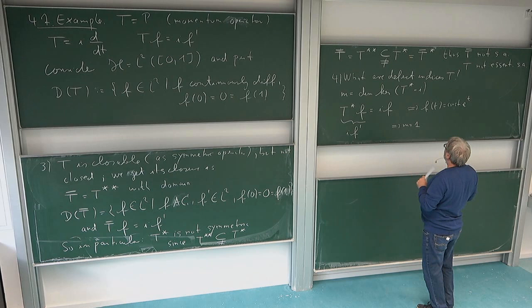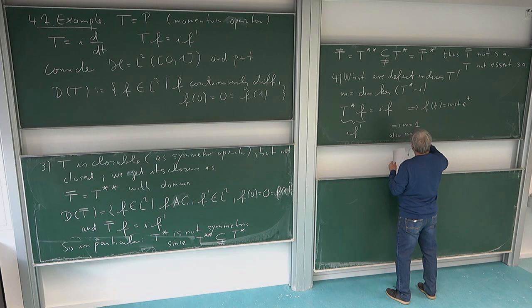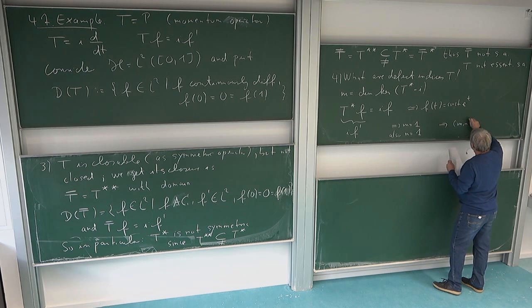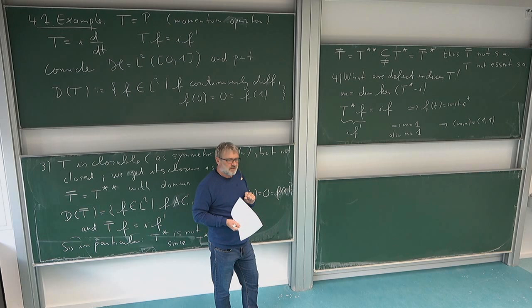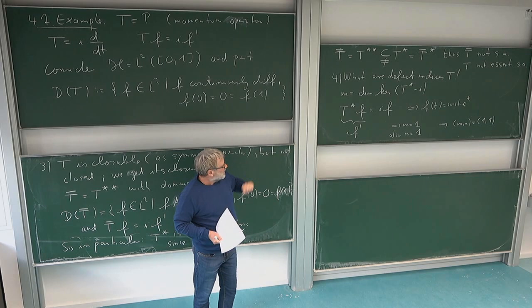In the same way, if I take T* plus iI, then I get e^{-t} as a solution, so N equals 1 as well. The pair of defect indices is (1,1). Since the two defect indices are equal, I can extend my operator to a self-adjoint operator. So my operator is not self-adjoint or essentially self-adjoint, but I should be able to find an extension which is self-adjoint.